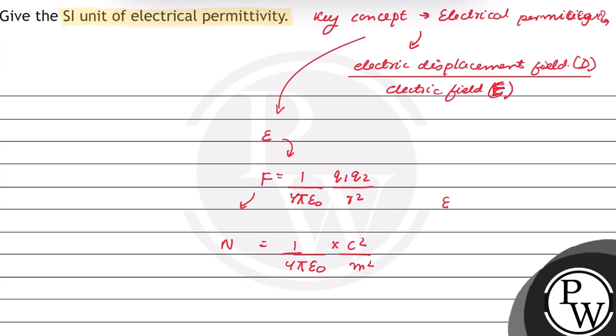Therefore, the SI unit of electrical permittivity will be equal to coulomb squared over meter squared Newton, or this can be represented as coulomb squared Newton to the power minus 1 meter to the power minus 2.